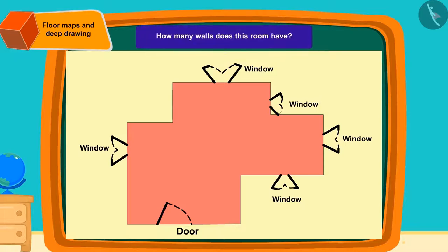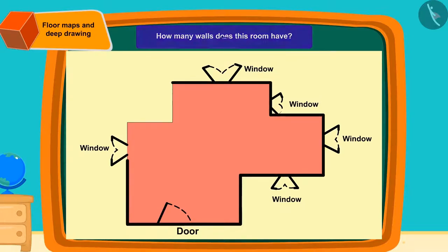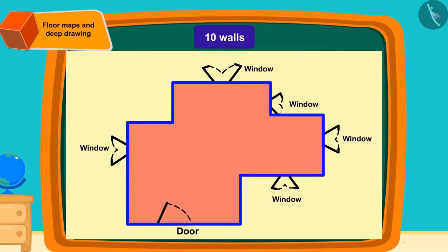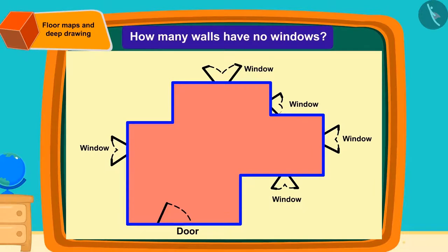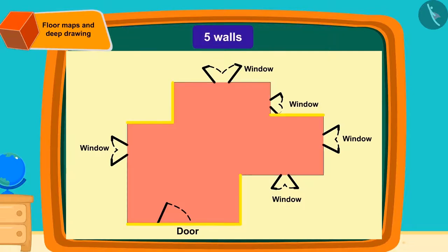How many walls does this room have? Right, this room has ten walls. How many walls are there in this room with no windows? There are five walls with no windows.